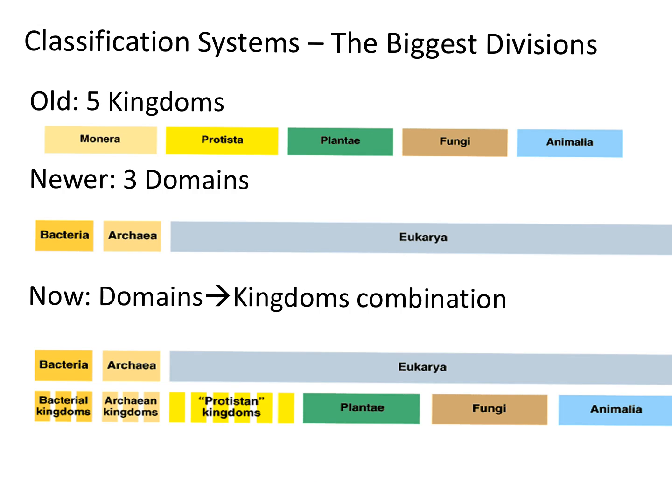Currently, taxonomists are in the process of combining two different taxonomic systems: the Five Kingdoms system and the Three Domains system.